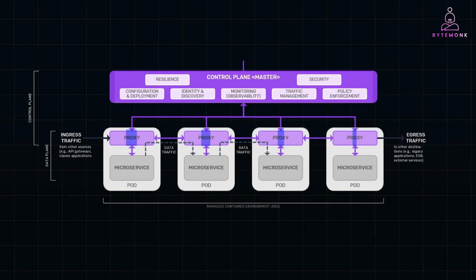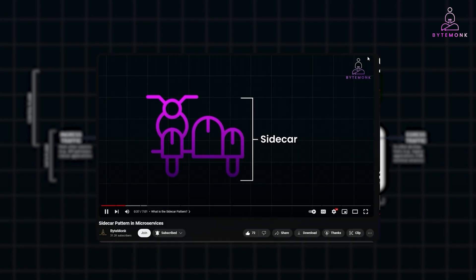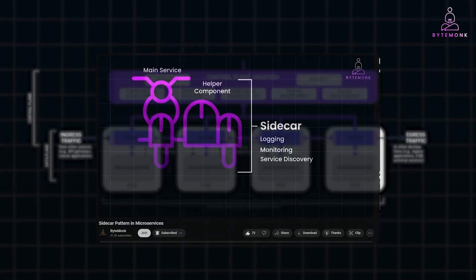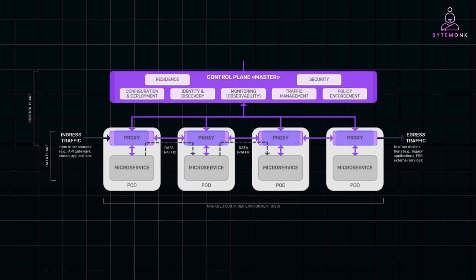A service mesh operates through sidecar proxies that are deployed alongside each service. These proxies intercept all network traffic between services, allowing the service mesh to manage communication independently of the services themselves.